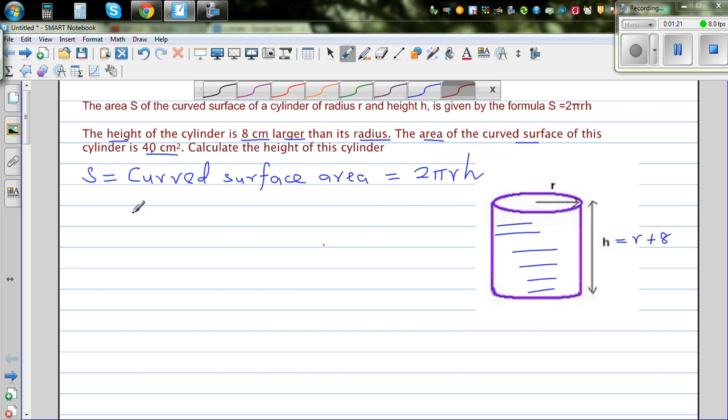Let us write the formula. We have the formula S equals 2πrh. That's the first thing given. Always good to write the facts. The second thing given is h equals r plus 8. And the third thing is S equals 40 cm squared.